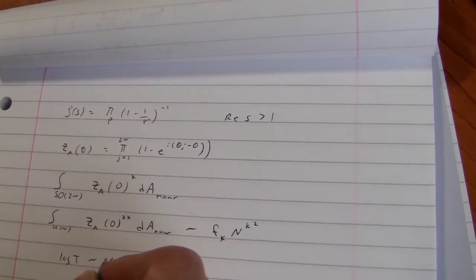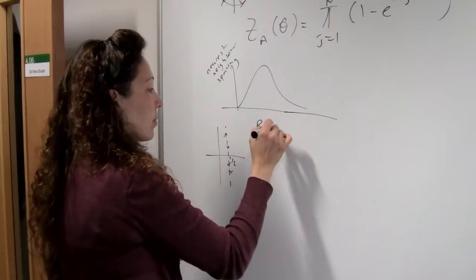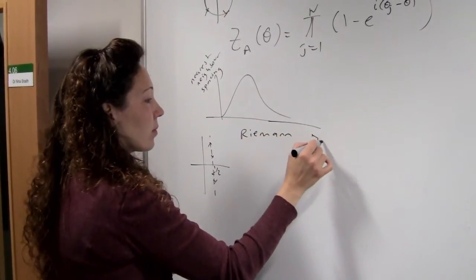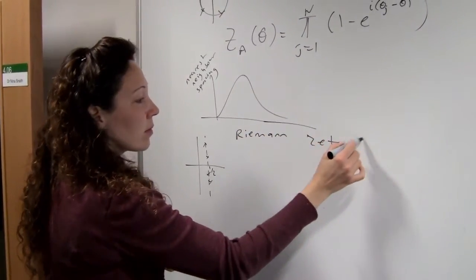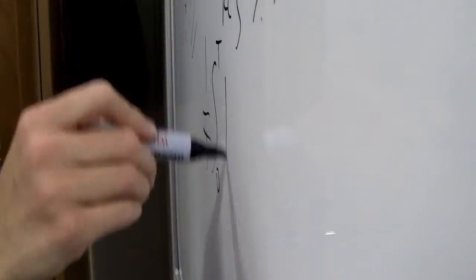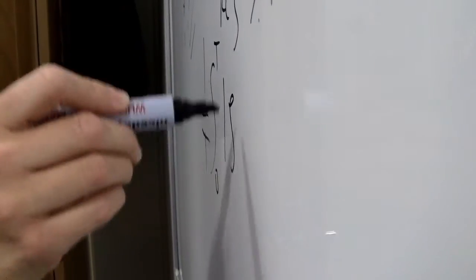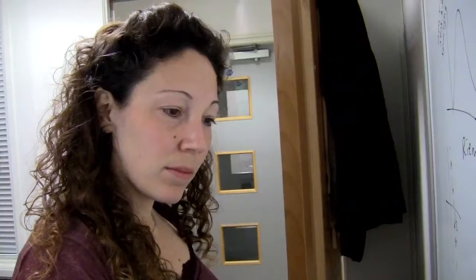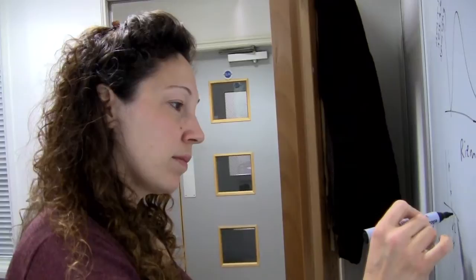Questions to do with prime numbers and the Riemann zeta function, for instance, which have been around for 100 to 150 years and which are as yet unanswered. What we aim to do is use a technique that actually originates in physics called random matrix theory.